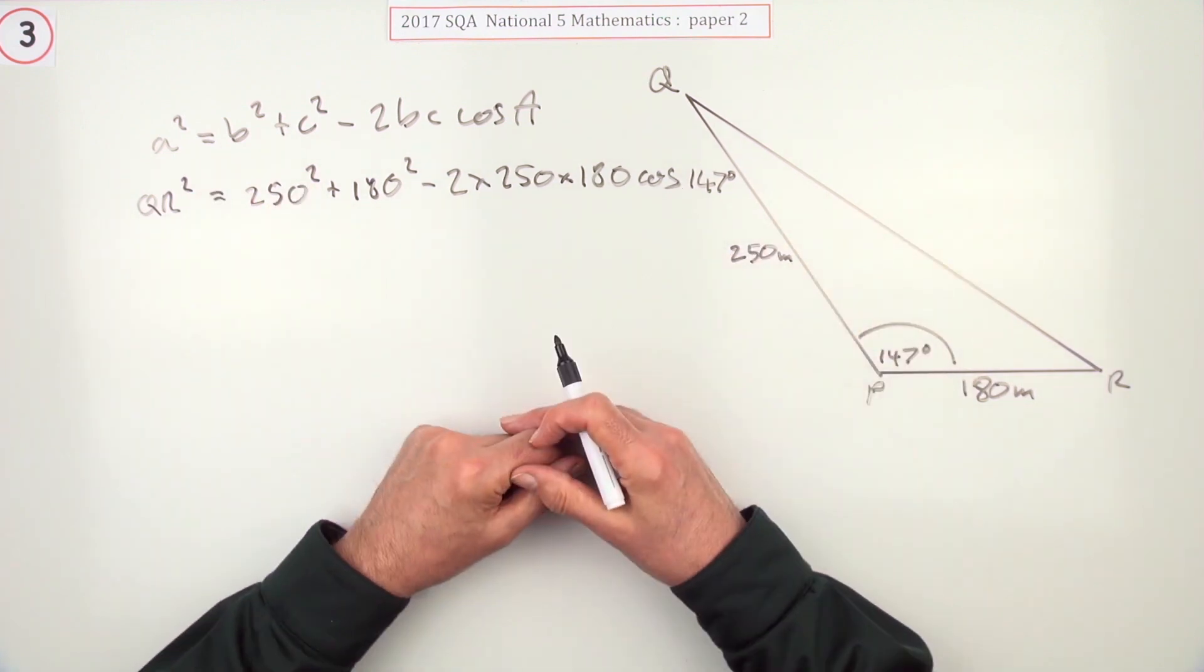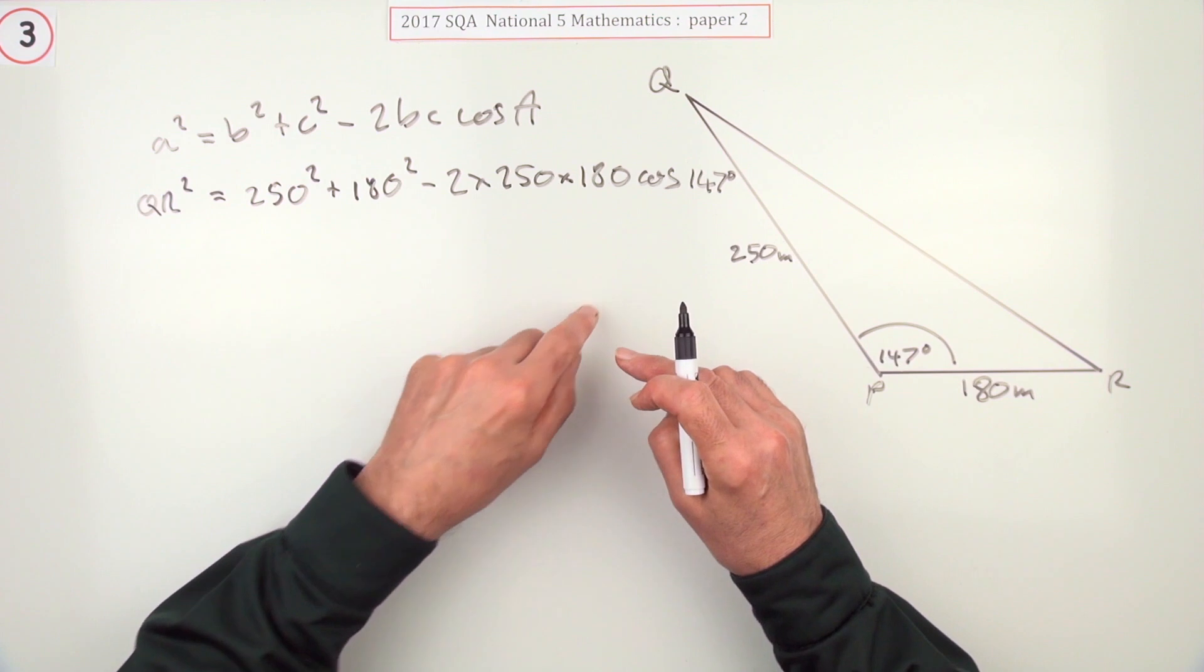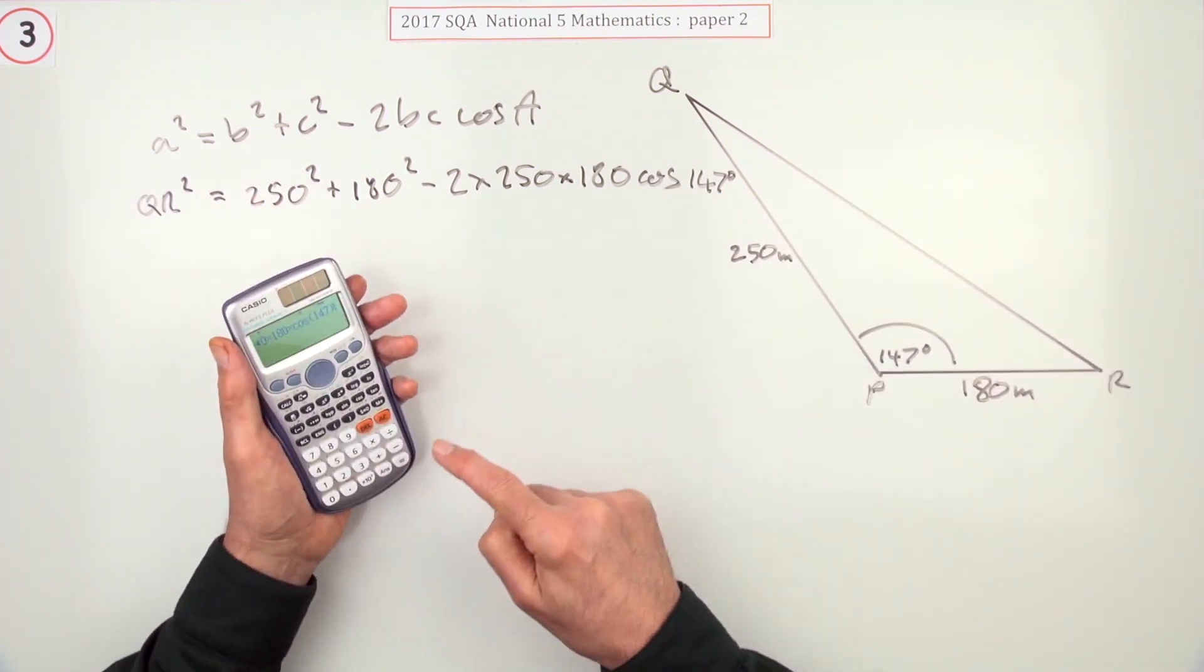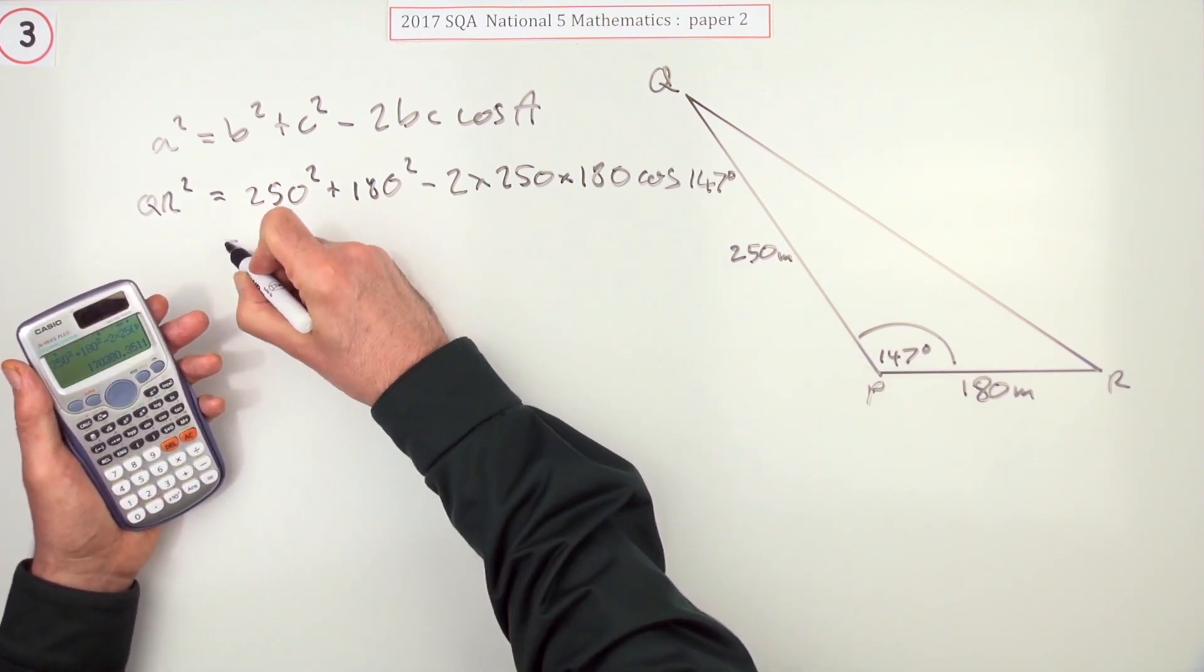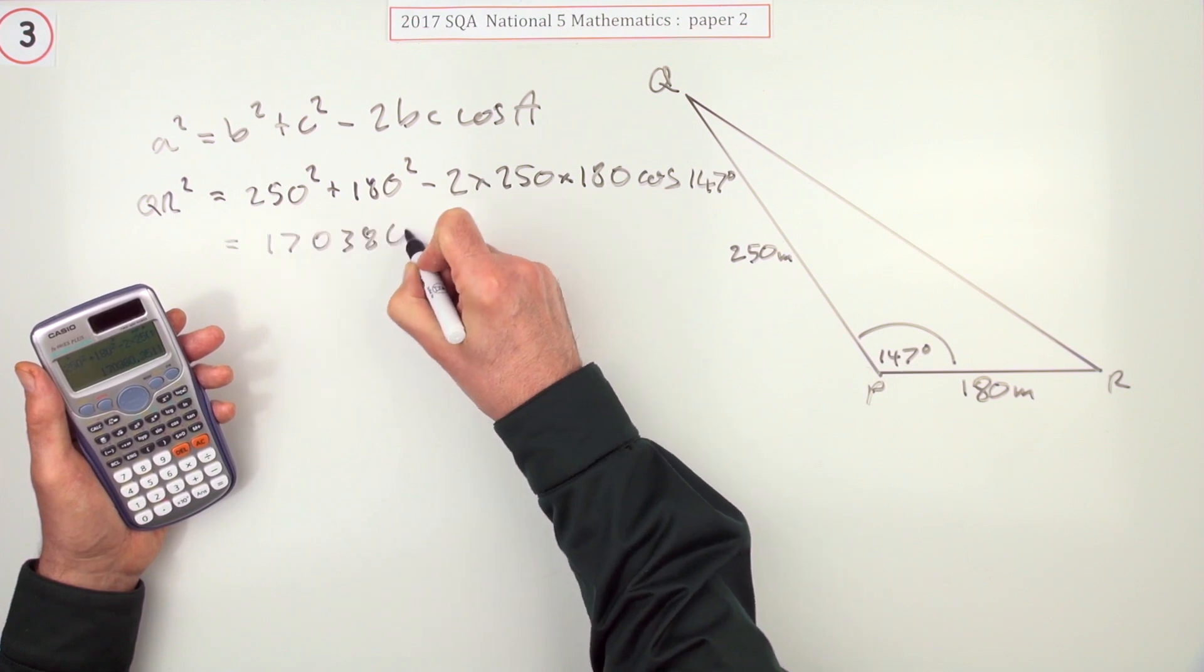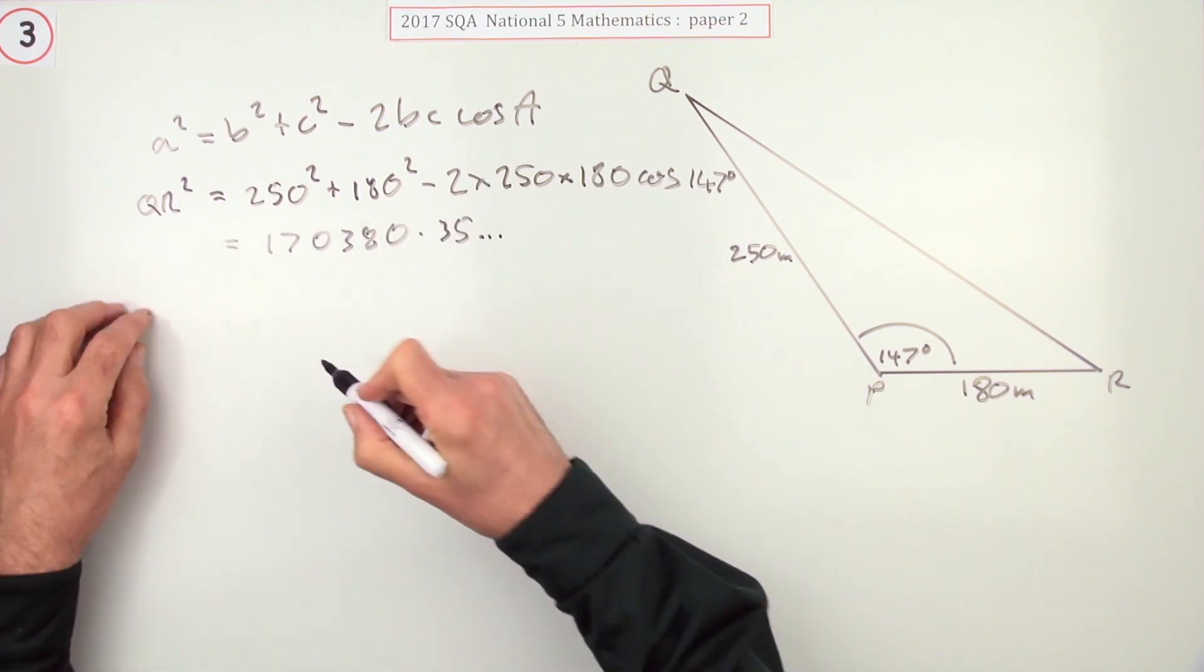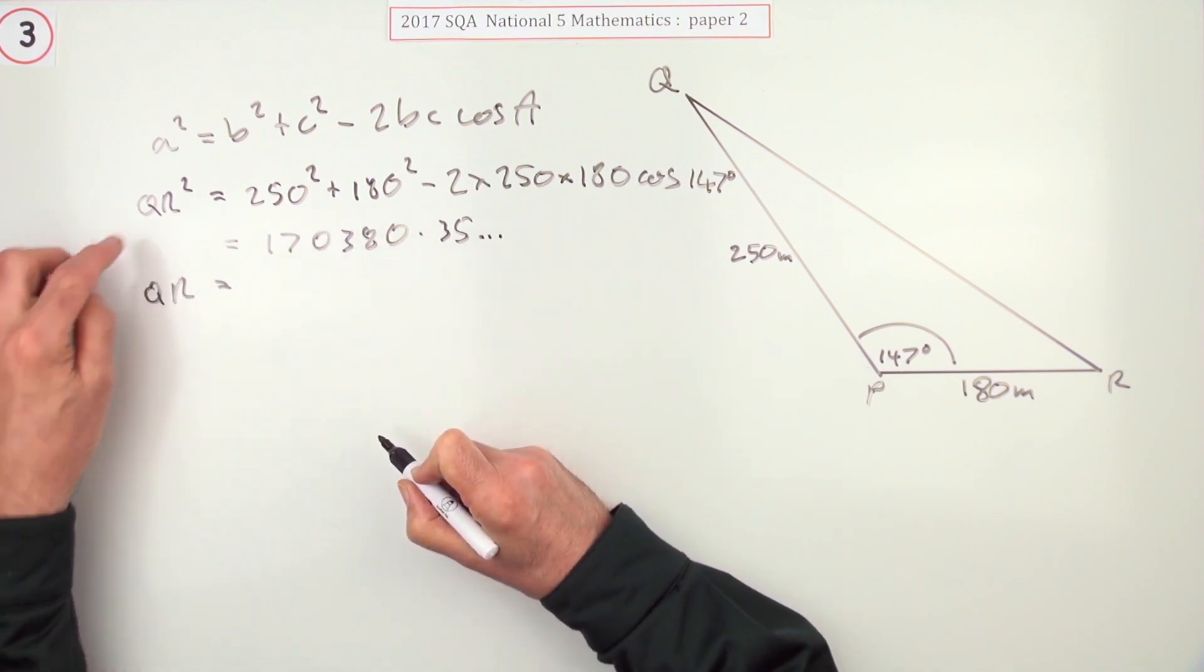In fact you could probably just do the square root at the same time and be done with it. However, typing that in gives you a big number: 170,380.35 and so on, which means that QR, because that's obviously far too big and you've still got to square root it.